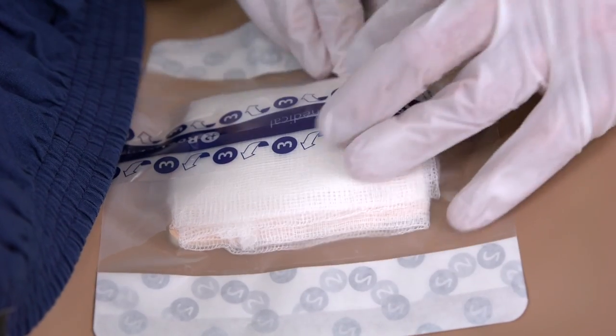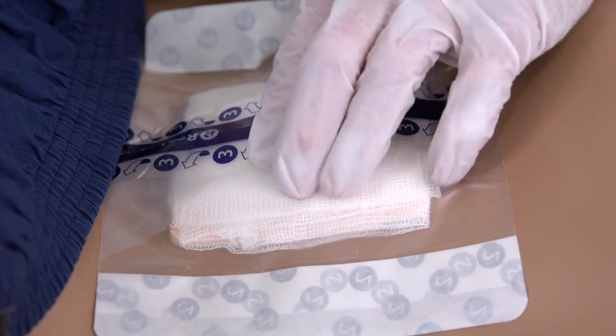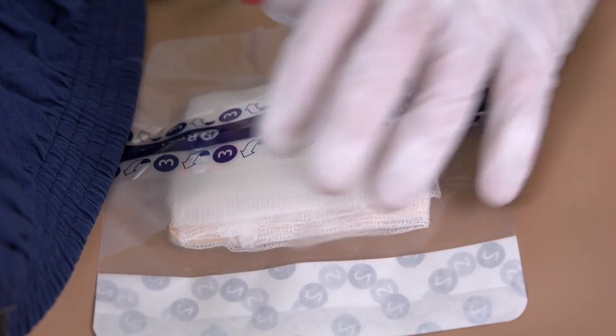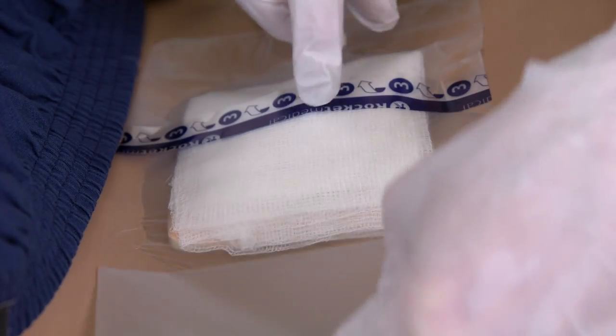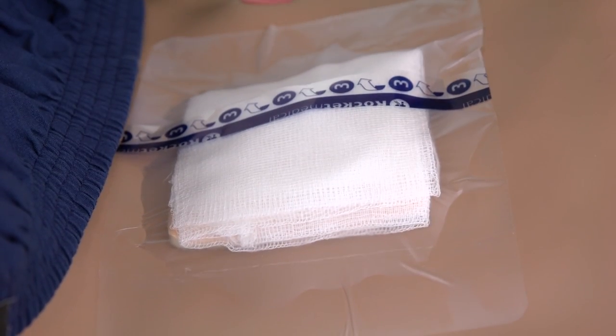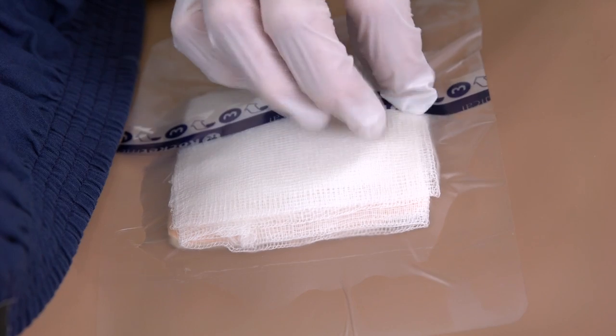Remove both end paper tabs labeled 2 while continuing to smooth the edges. Then, remove the cover sheets labeled 3. Smooth and press the edges of the dressing, making sure that it's completely secure.